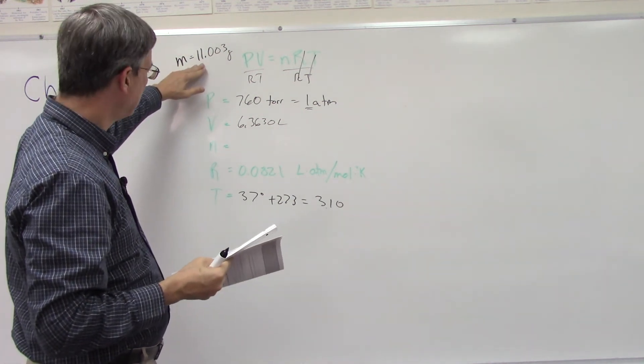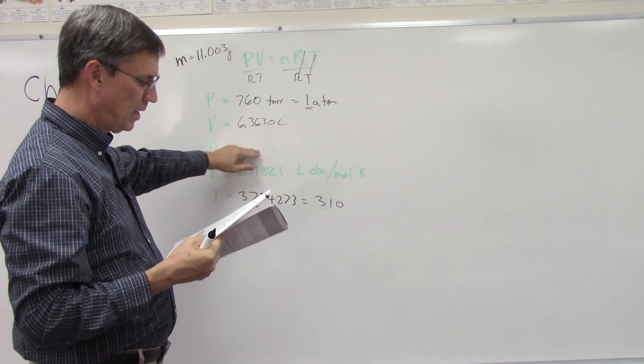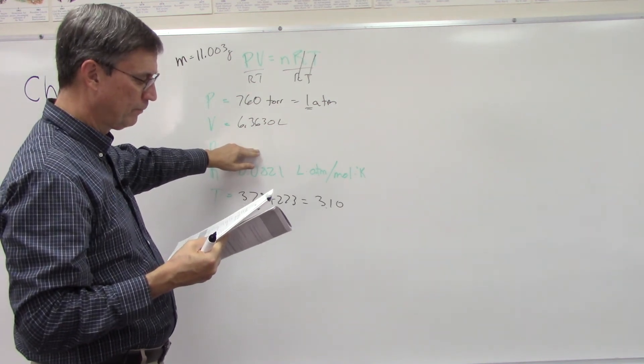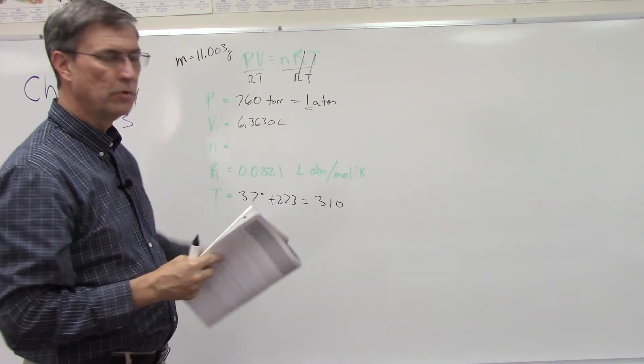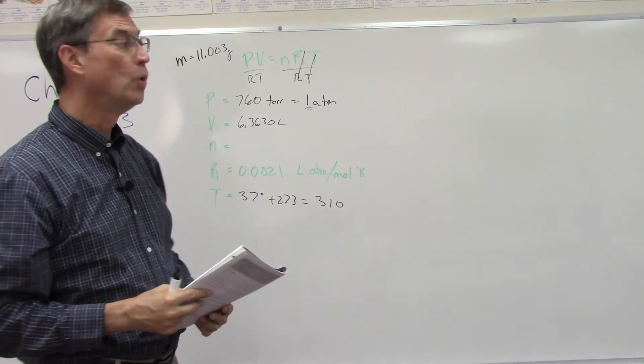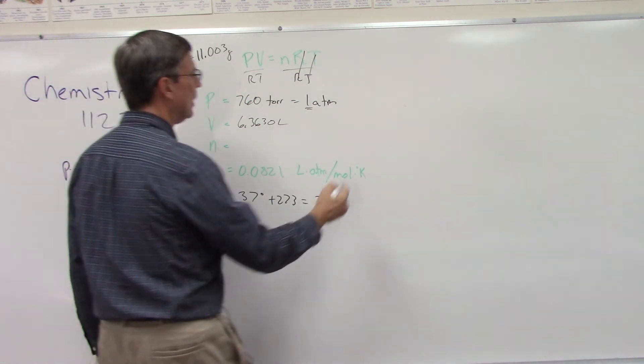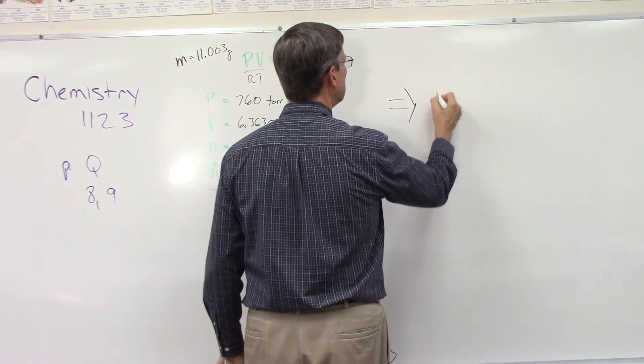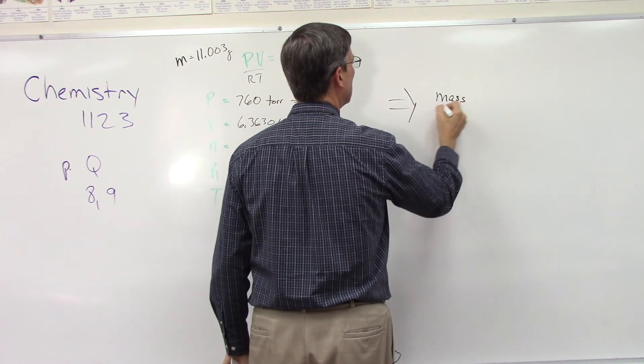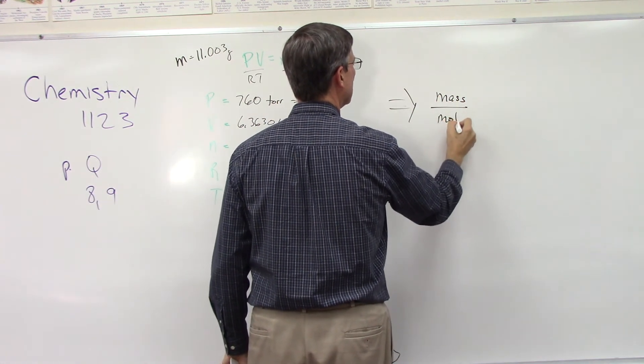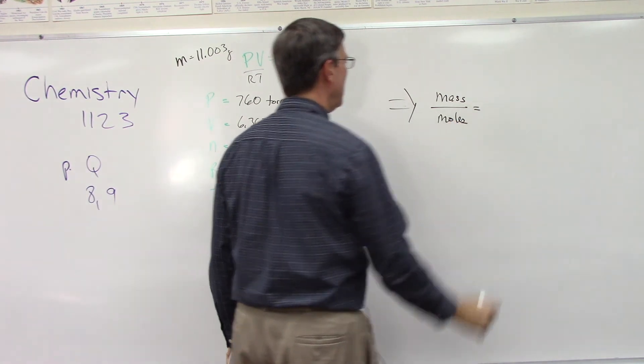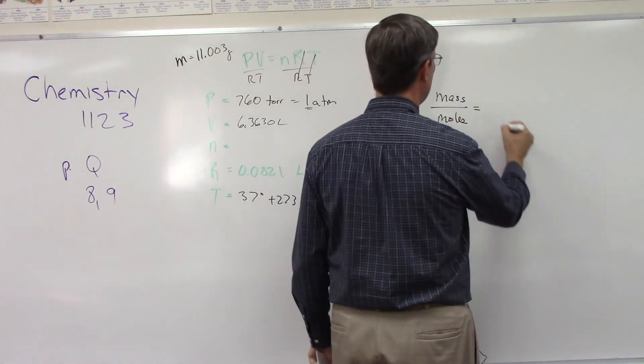If we take the mass and divide by the number of moles, then we will have the grams per mole. So the last step is mass divided by moles, and that will be the molar mass.